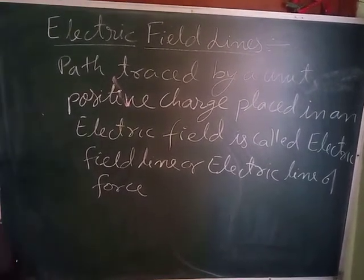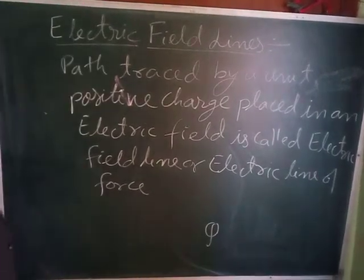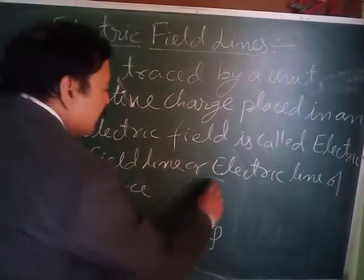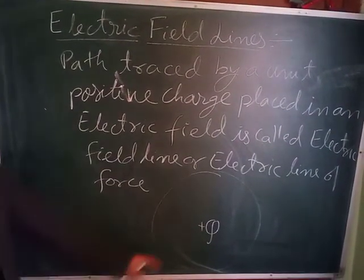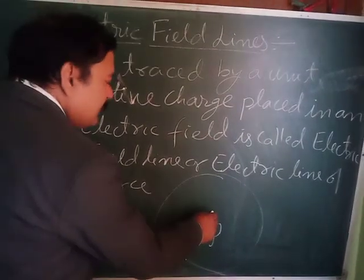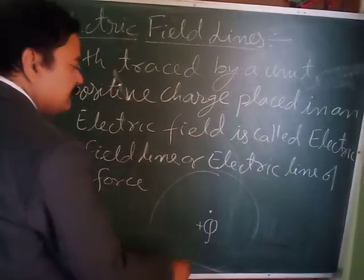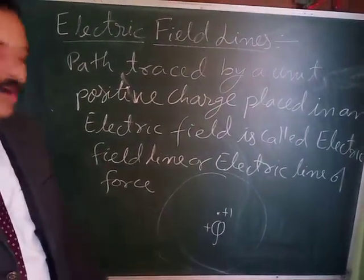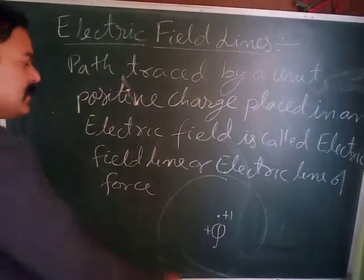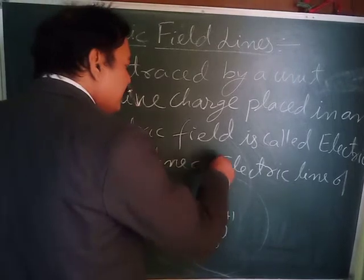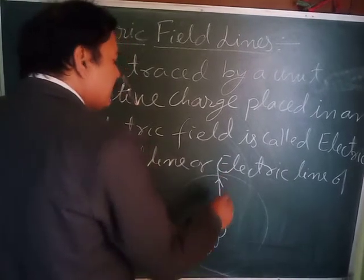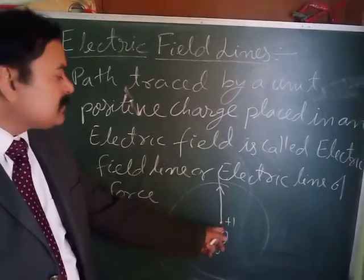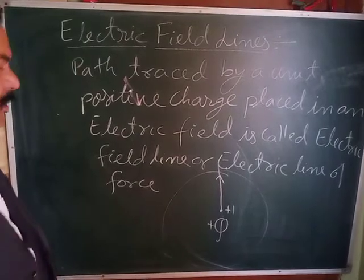Suppose here you have placed a charge Q, and it is a positive charge, so it will create its own electric field around it. Now suppose you place a unit positive charge nearby. This positive charge will repel the unit positive charge, so the unit positive charge will start moving away and will follow a certain path. This path is called an electric field line.